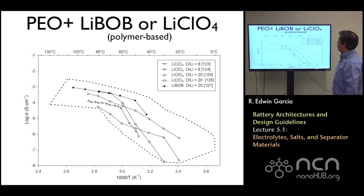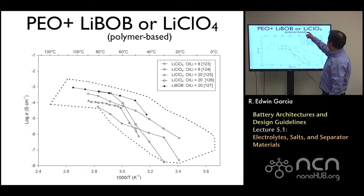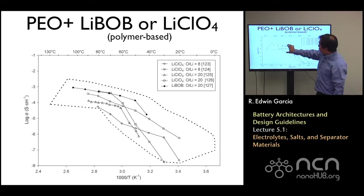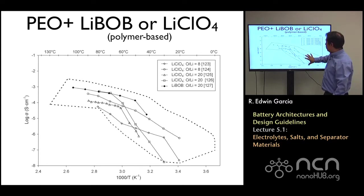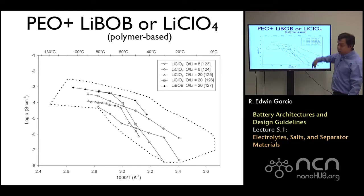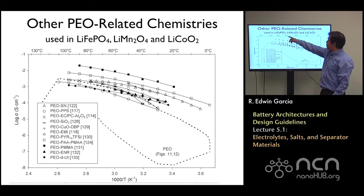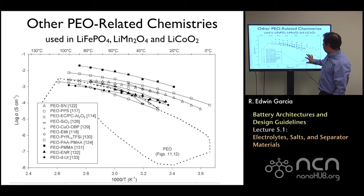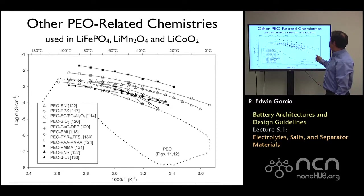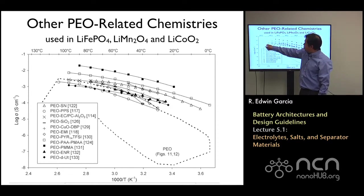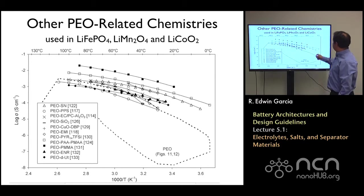If you instead use PEO with LiClO4, you can see how this range changes and really opens up a different regime of behavior — it could drop all the way towards low temperatures. And PEO on other chemistries, as used with LFP, LMO, and LCO, actually raises it by an order of magnitude with respect to the PEO system. Its range is very nice because you can go all the way to 110 degrees down to basically zero degrees if you pick your chemistry correctly.